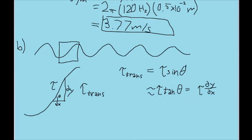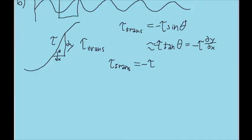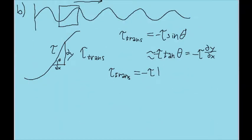We should also include a negative sign because the tension is pointing in the opposite direction that the wave propagates — if the bar is moving up and down on the left and sending the wave to the right, those are opposites. So we take the partial derivative with respect to x instead of t, which gives us negative k times y_sub_m times the same cosine function, cosine of kx minus omega*t.